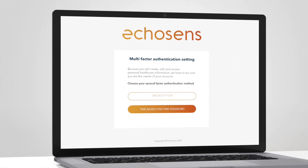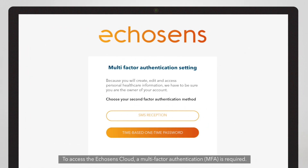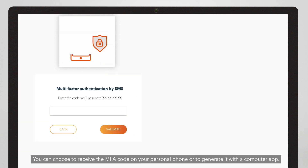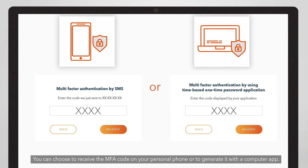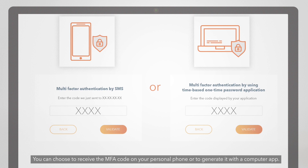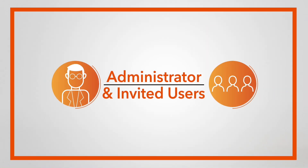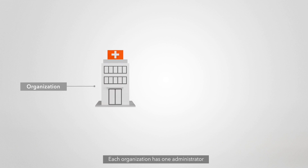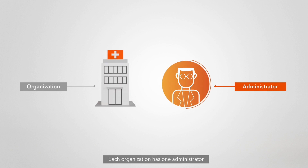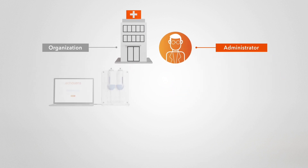To access the Echosense cloud, multi-factor authentication is required. You can choose to receive the MFA code on your personal phone or to generate it with a computer app. Each organization has one administrator who can invite and manage additional users.